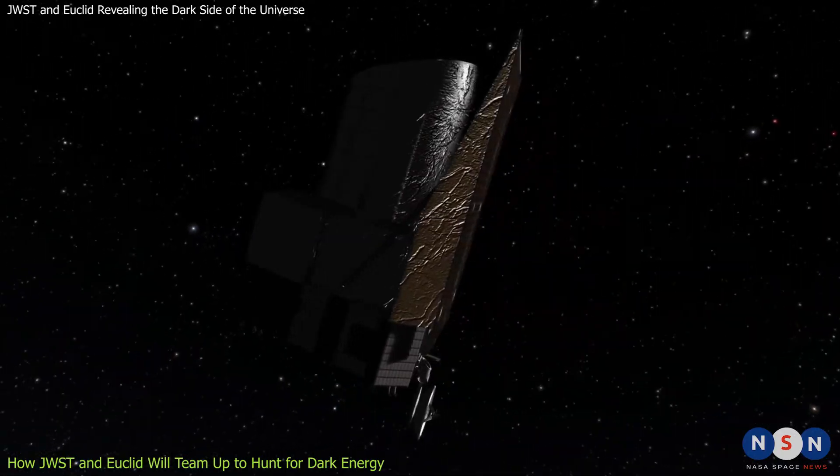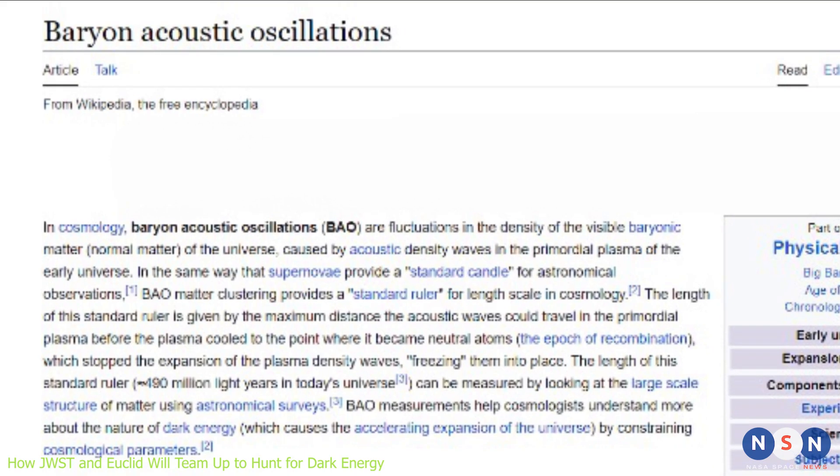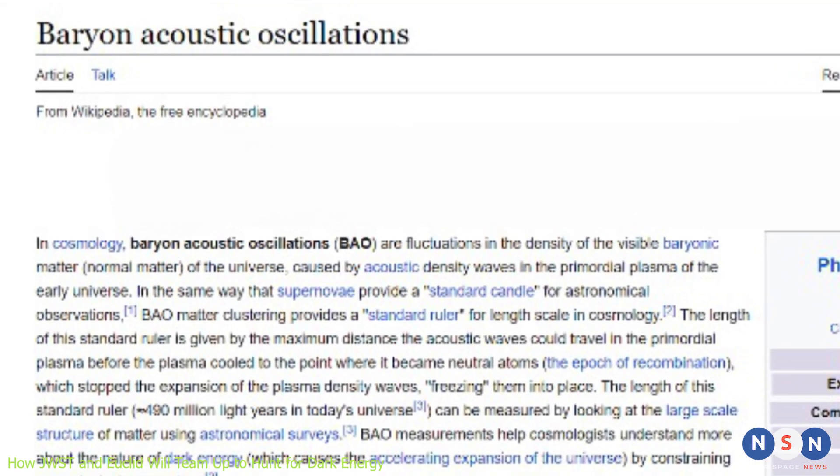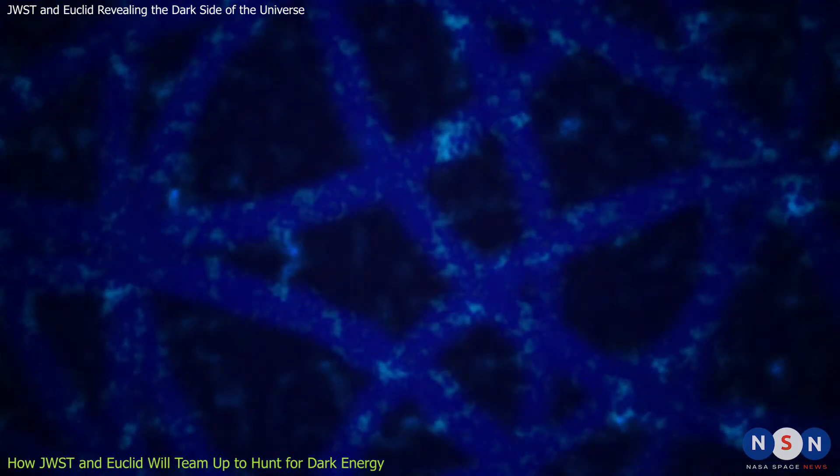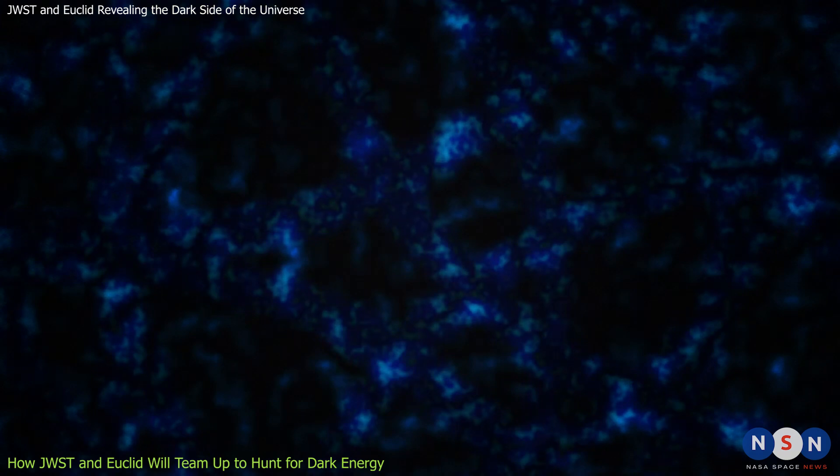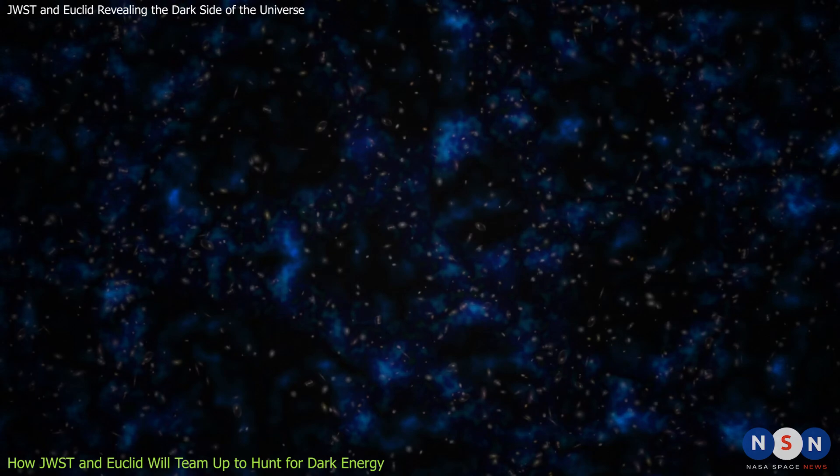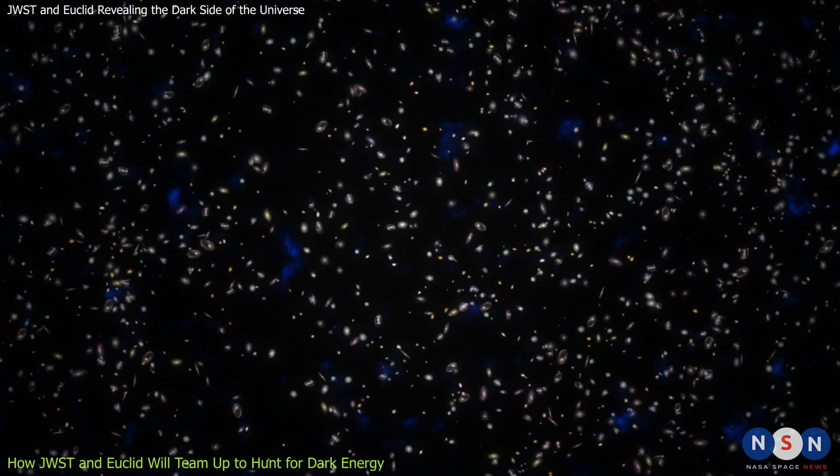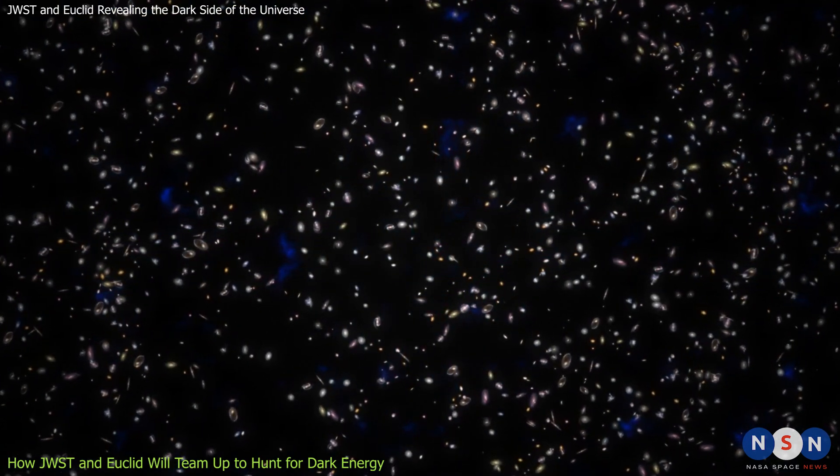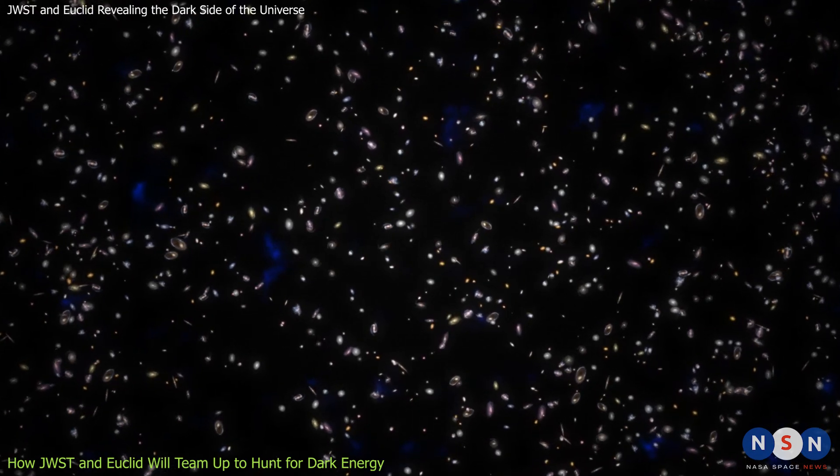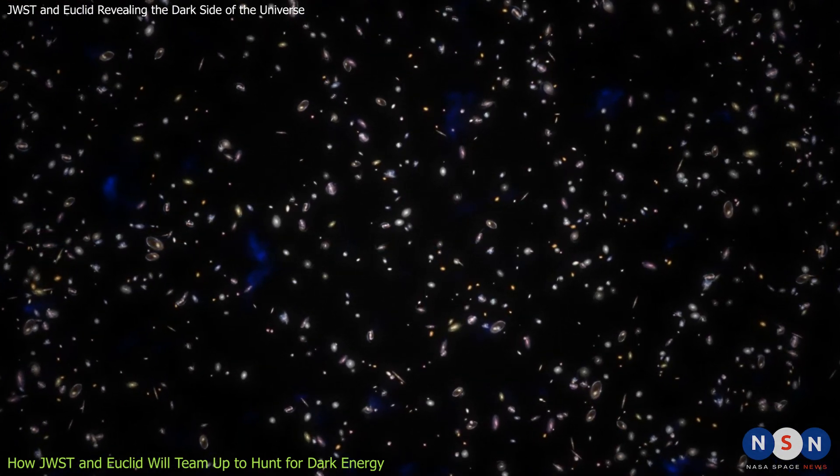Euclid will also use another technique called baryon acoustic oscillations, or BAO for short. BAO are sound waves that were created in the early universe when matter and radiation were tightly coupled. These sound waves left imprints on the distribution of matter in the universe, creating a characteristic scale that can be used as a cosmic ruler to measure distances and expansion rates.